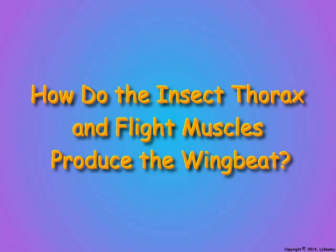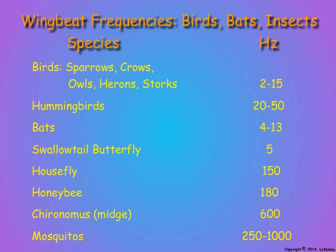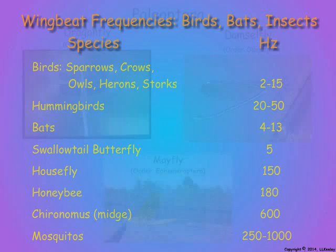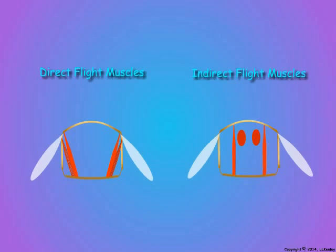Unlike birds and bats, the flight muscles of nearly all insects do not attach directly to the wings, but produce wingbeats by distorting the thoracic cuticle. Using muscles to create wingbeats indirectly is unique to insects and allows some insect species to develop remarkable rates of wingbeats that are 10 to 100 times faster than those of birds and bats. Only in the dragonflies, damselflies, and mayflies—the most primitive flying insects—do any of the muscles involved in the wingbeat actually attach directly to the wing.